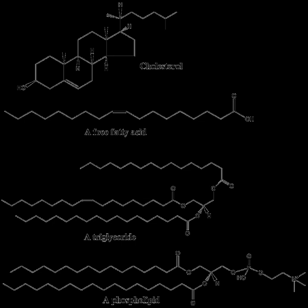The major dietary lipids for humans and other animals are animal and plant triglycerides, sterols, and membrane phospholipids. The process of lipid metabolism synthesizes and degrades the lipid stores and produces the structural and functional lipids characteristic of individual tissues.